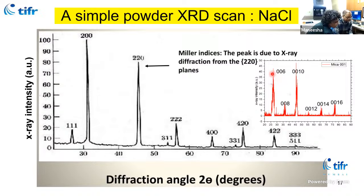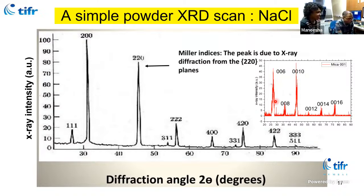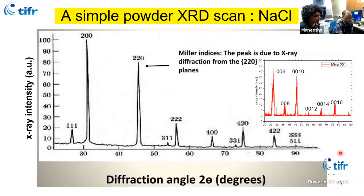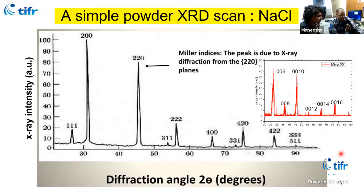A question about indexing: some peaks appear with 3 indices like 006, and some with more digits like 0010. The explanation is that 0010 is still three indices — it just happens that the third index is 10. This is a monoclinic material rather than hexagonal, so it uses only three Miller indices. It is not four-index hexagonal notation, just the number 10 in the L position.